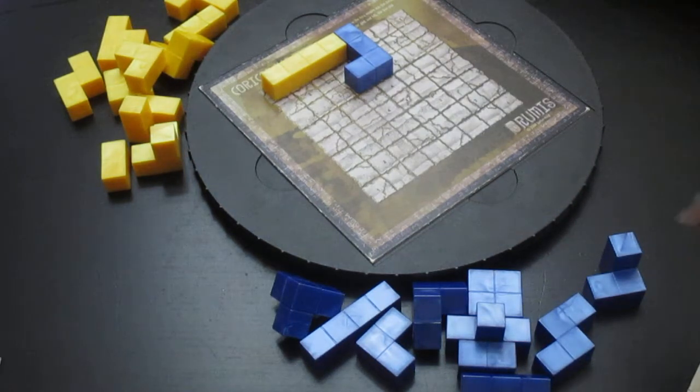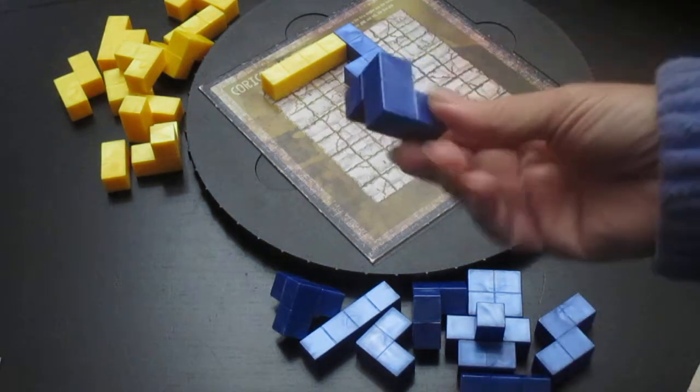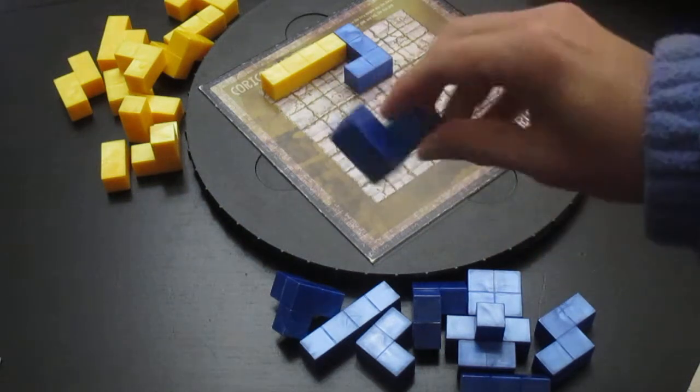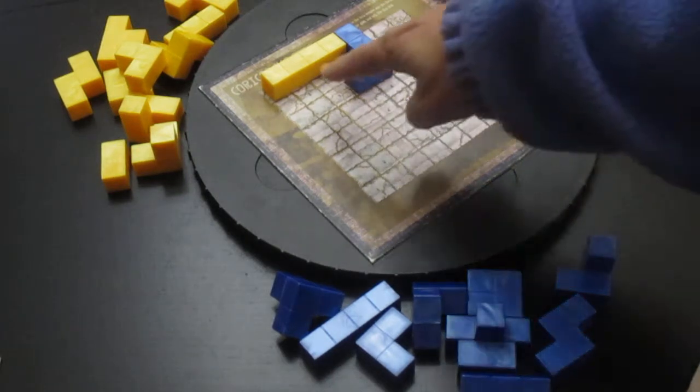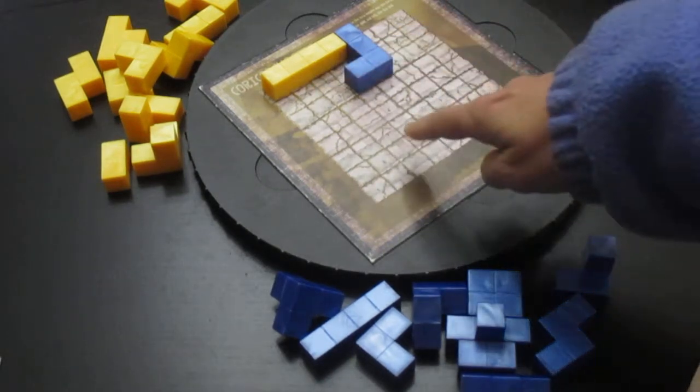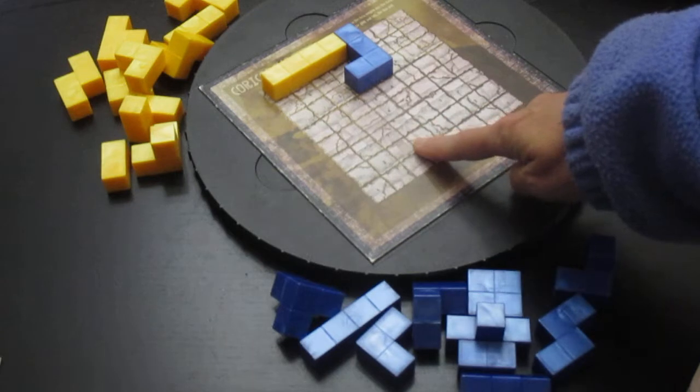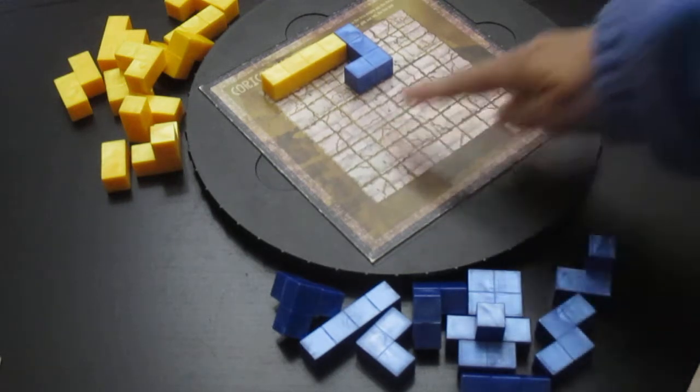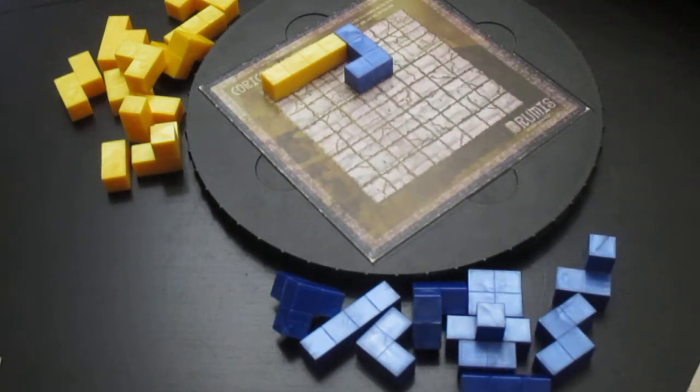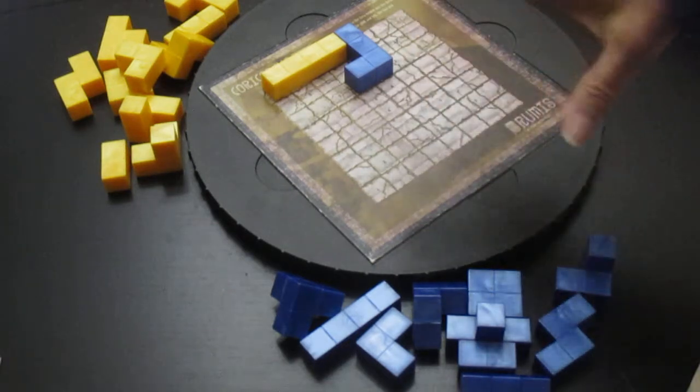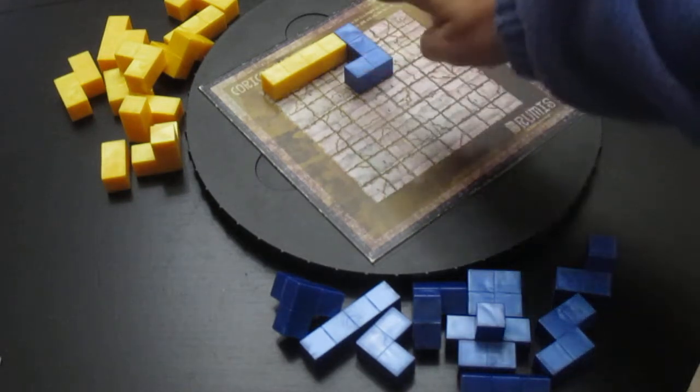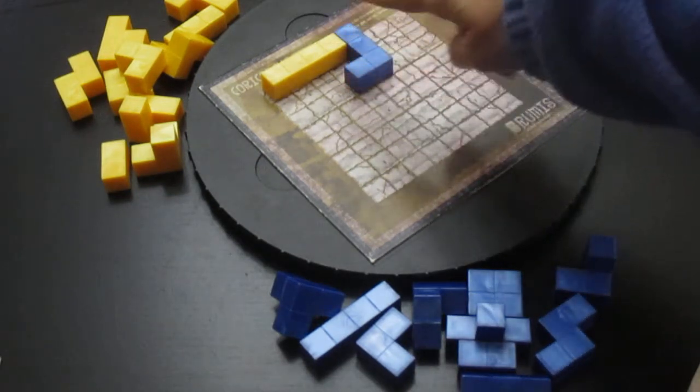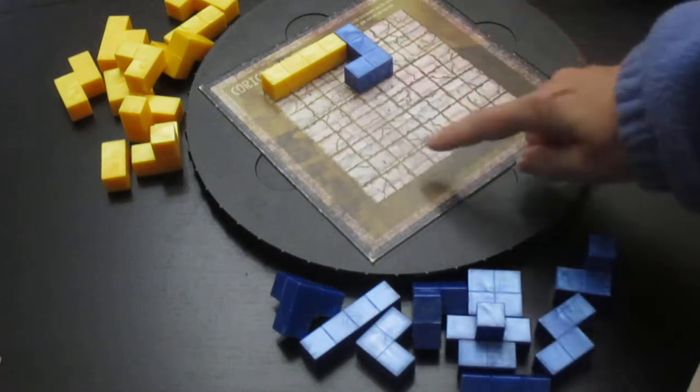Each player takes a colored set of pieces. There are 11 different shapes for each color, and then they start placing them on. Based on the type of tower that you're building, in this case we're building the pyramid, there is a limitation as to how high you can go. If you're playing with two players, for example, then the highest that you can go is going to be four stones high for the pyramid.